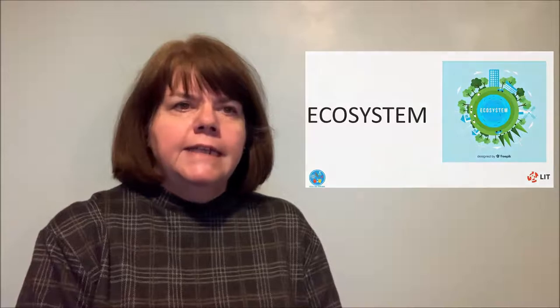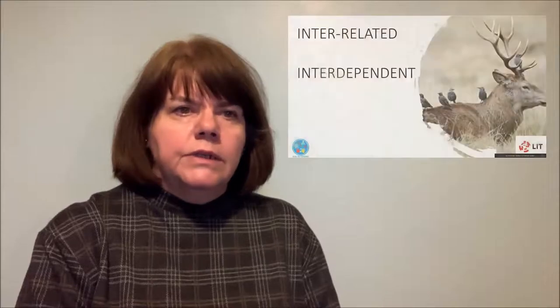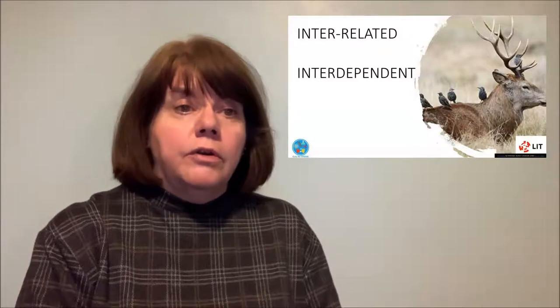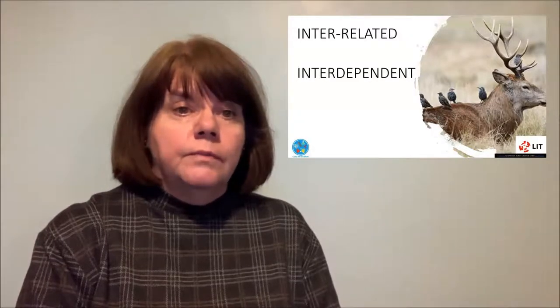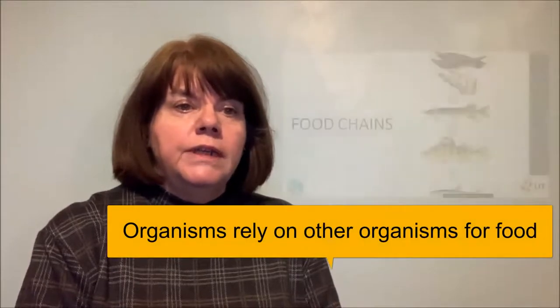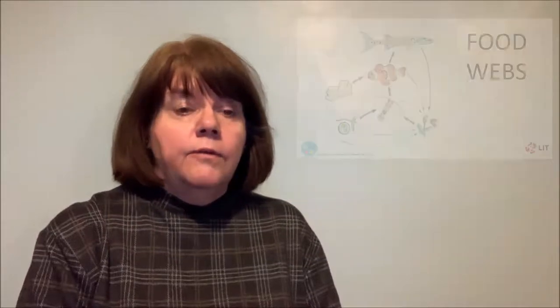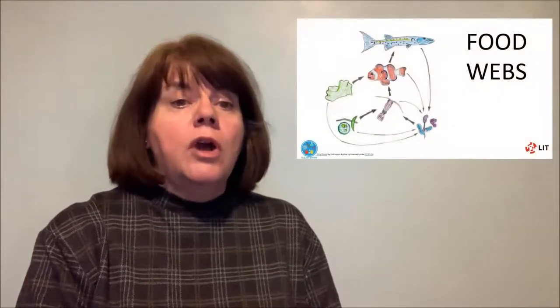What do we already know? An ecosystem is a complex network or web of interrelated and interdependent animals and plants within a common environment. Many organisms in the environment rely on other organisms for food. The feeding relationships between organisms can be shown in simple diagrams called food chains. Food webs show a more complex series of food chains with common links.